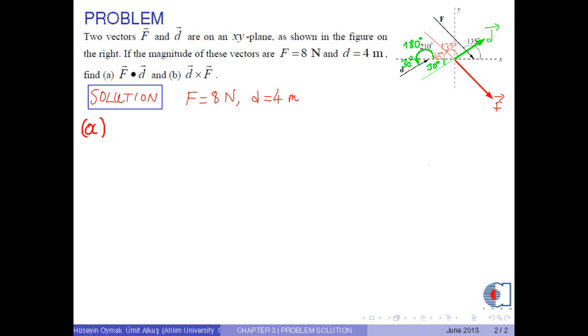Therefore, the angle between the vectors becomes theta equals 45 degrees plus 30 degrees, so 75 degrees.